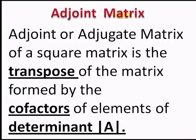The adjoint matrix, or adjugate matrix, of a square matrix is the transpose of the matrix formed by the cofactors of its elements. Using the elements of the determinant, we find the minors, and using those minors we find the cofactors. Cofactors are the signed minors, and the transpose of the cofactor matrix is called the adjoint matrix.